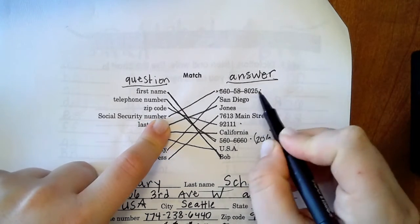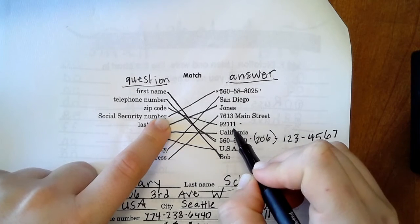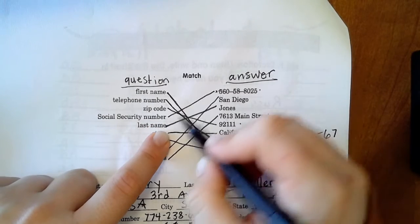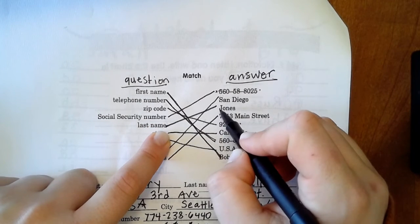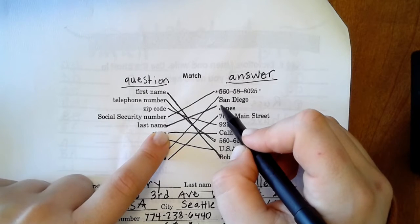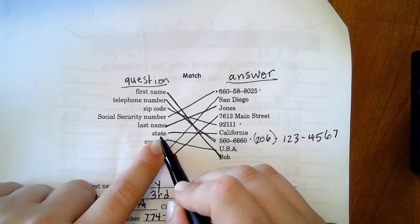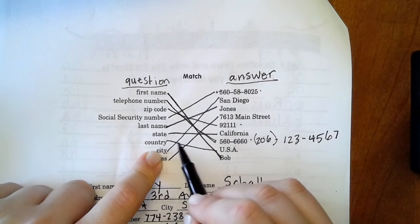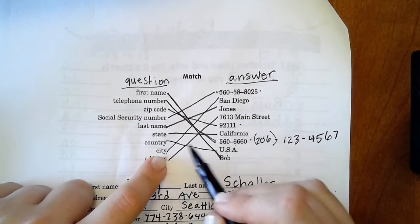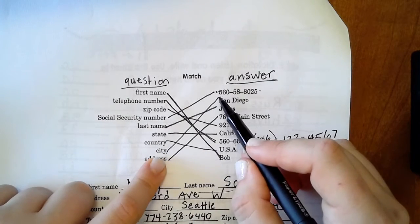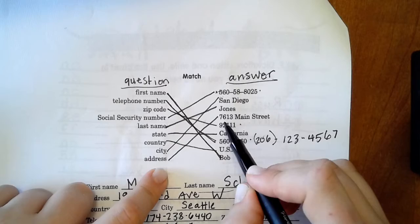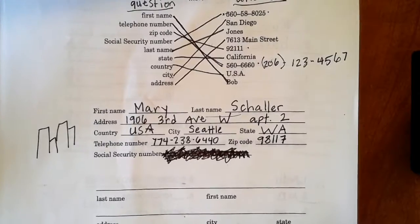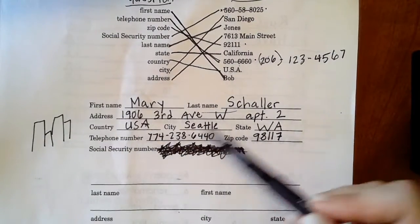Next, zip code. Now we have two numbers left, this one and this one. Zip code is this one. Last name is Jones, remember Bob Jones. Then state is California, country USA, city San Diego, and address 7613 Main Street.